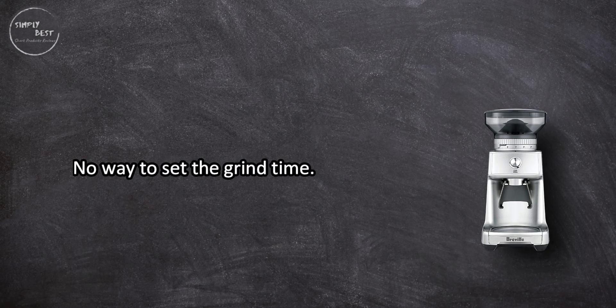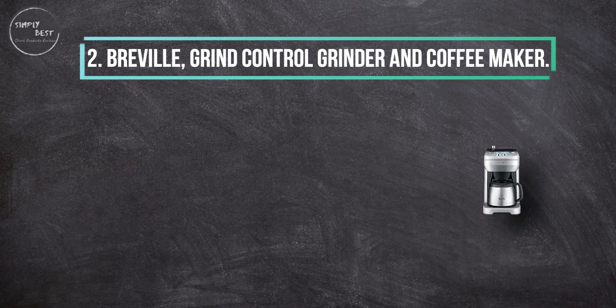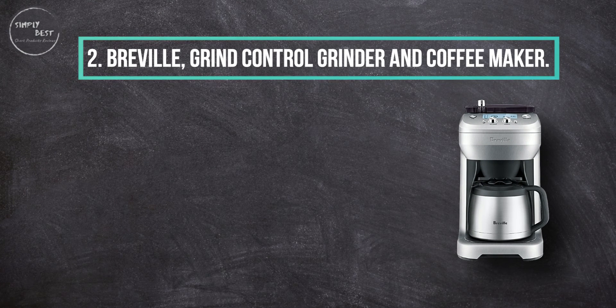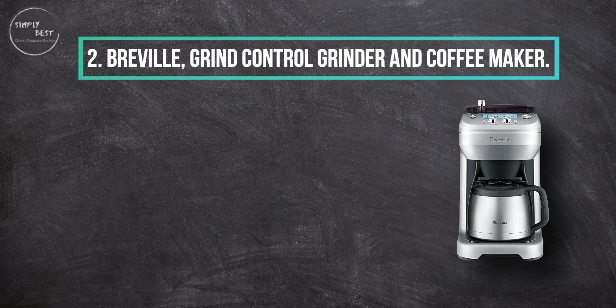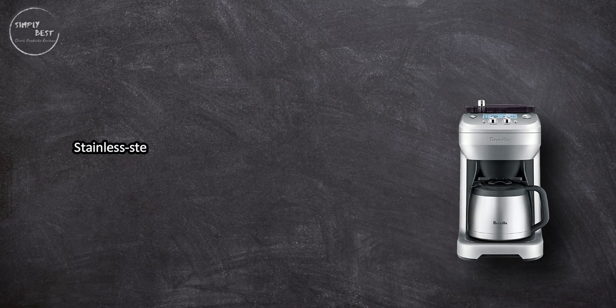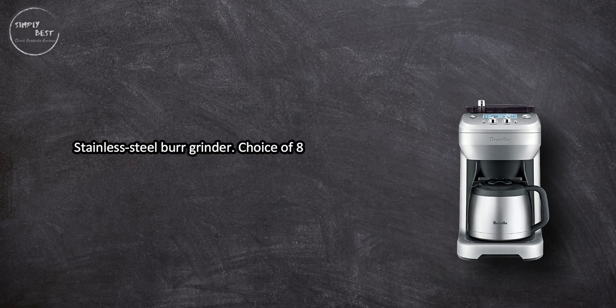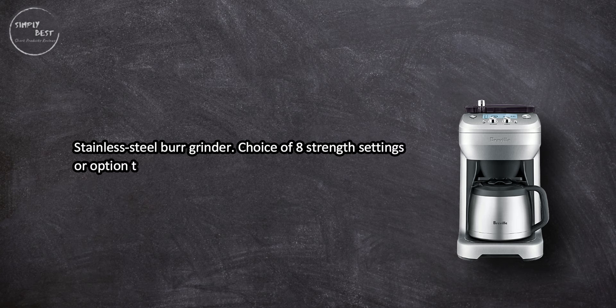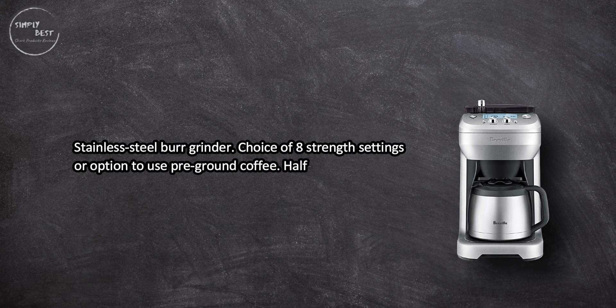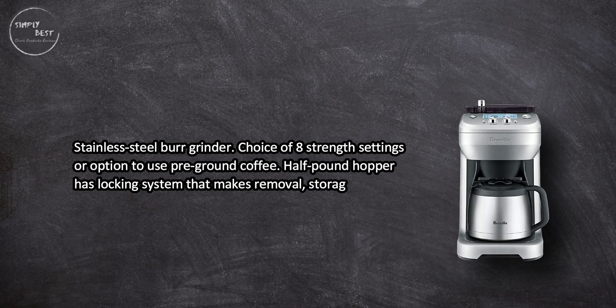At number two: Breville Grind Control Grinder and Coffee Maker. Stainless steel burr grinder. Choice of eight strength settings or option to use pre-ground coffee. Half pound hopper has locking system that makes removal, storage, and transfer easy.